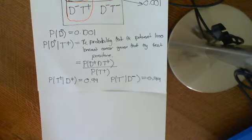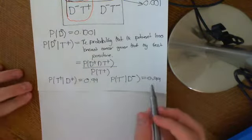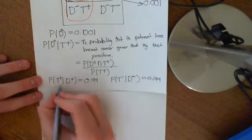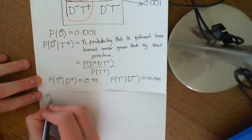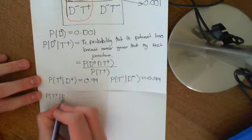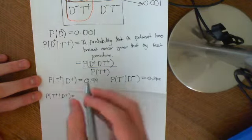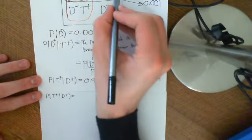Welcome to part two of this video on the problem with screening. In the first video we had got to this point here. So now what we're going to do is write out what these things actually are. So the probability that you test positive, given the fact that you have the disease, is equal to... Well, that is the probability that you're in the diseased category.